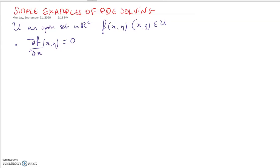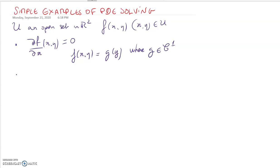Don't hesitate to pause the video and try to solve it yourself. The answer: if the partial derivative in x must equal zero, that means the function does not depend on x. So f(x,y) equals some function g(y) — whichever function of y you like — where g is a function of class C¹ on some interval in ℝ. We already did something very similar when finding whether vector fields were conservative.